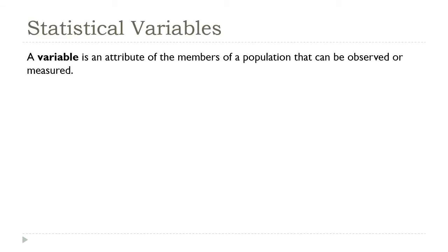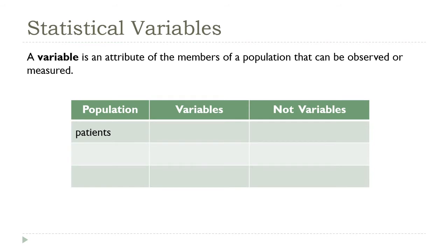Variables in statistics are slightly different than what you're used to from algebra. A statistics variable is any attribute of the population that can be observed or measured, and this includes both numeric attributes like volume and non-numeric attributes like color or gender.